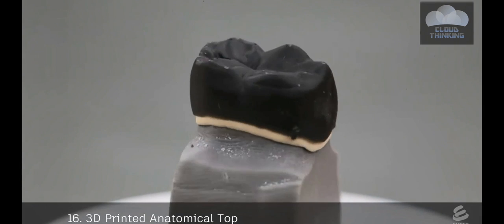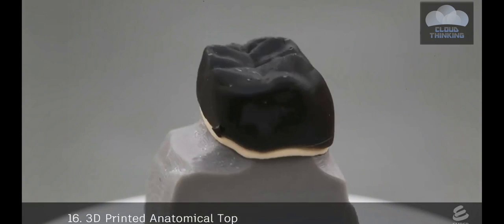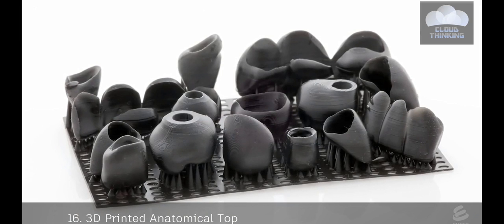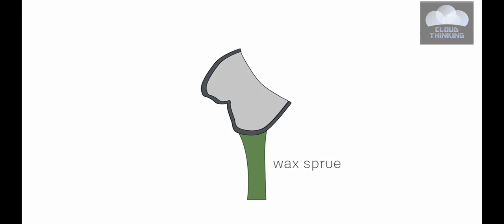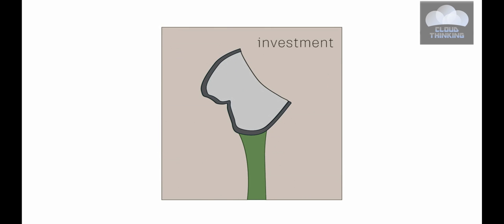To create the porcelain layer, an anatomical top is first 3D printed on Ember in castable resin. The top slides onto the opaque casting. The casting and top are then attached to a wax sprue. The part is surrounded again with liquid investment.